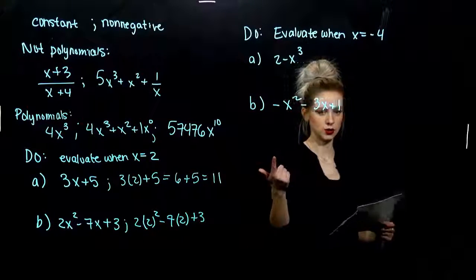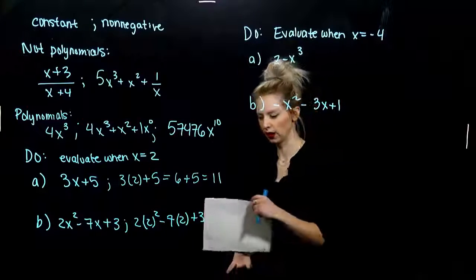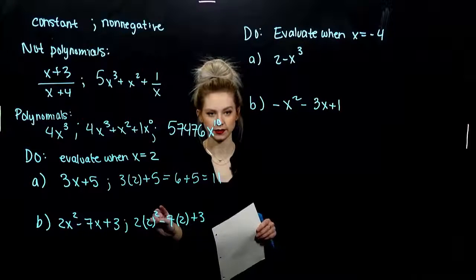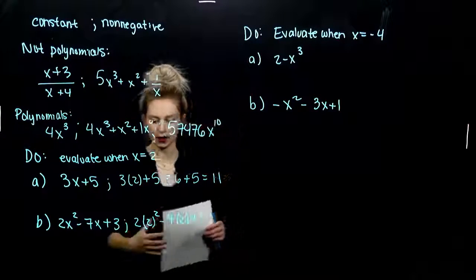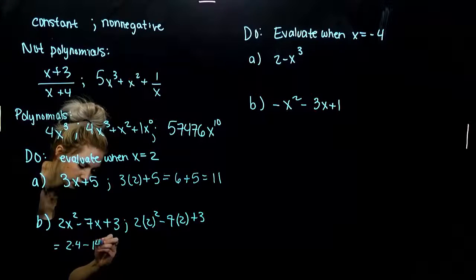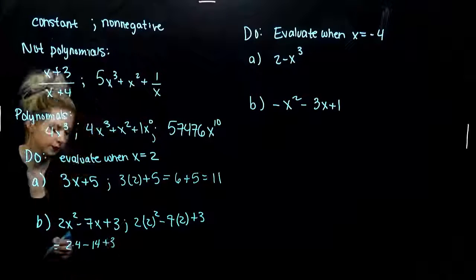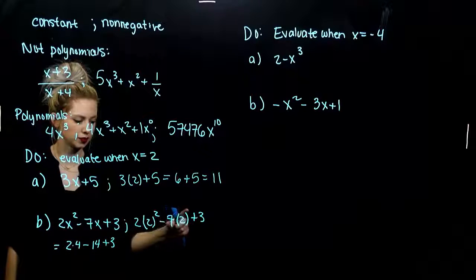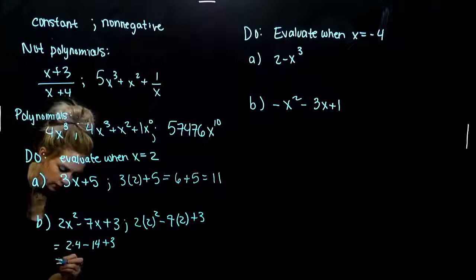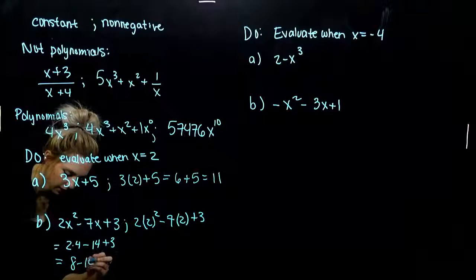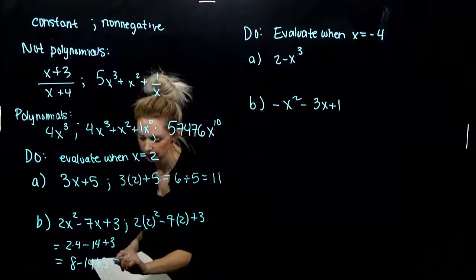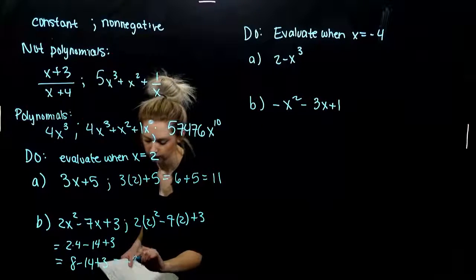Please excuse my dear Aunt Sally. We have to go in that order. In the parentheses, we can't simplify it all, so we want to look at exponents next. 2 squared gives me 4. So, I've got 2 times 4 minus 14 plus 3. We can start evaluating in the terms individually as long as we're not adding and subtracting yet. Next, multiplication comes first. So, we've got 8, taking away 14, adding 3. Moving left to right, what are we looking at?